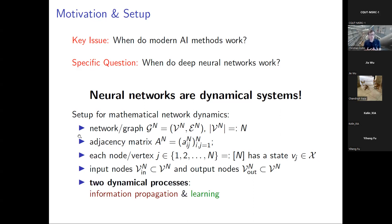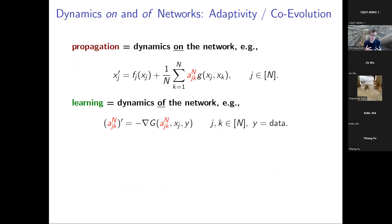There are two dynamical processes running simultaneously: information propagation — sending something from input nodes to output nodes via layers or recurrent structures — and the learning part, where you adjust the weights of the network to figure out the actual task. Information processing and learning usually run in tandem, so there are two coupled dynamical systems.